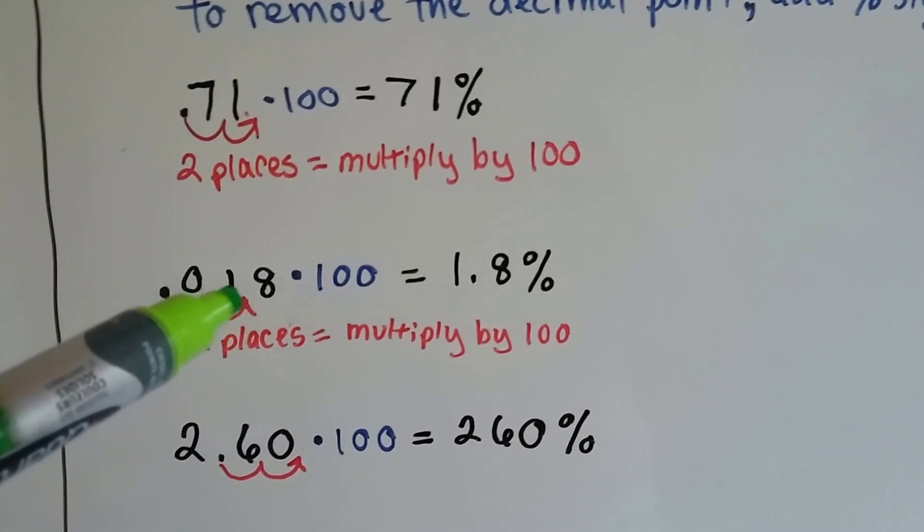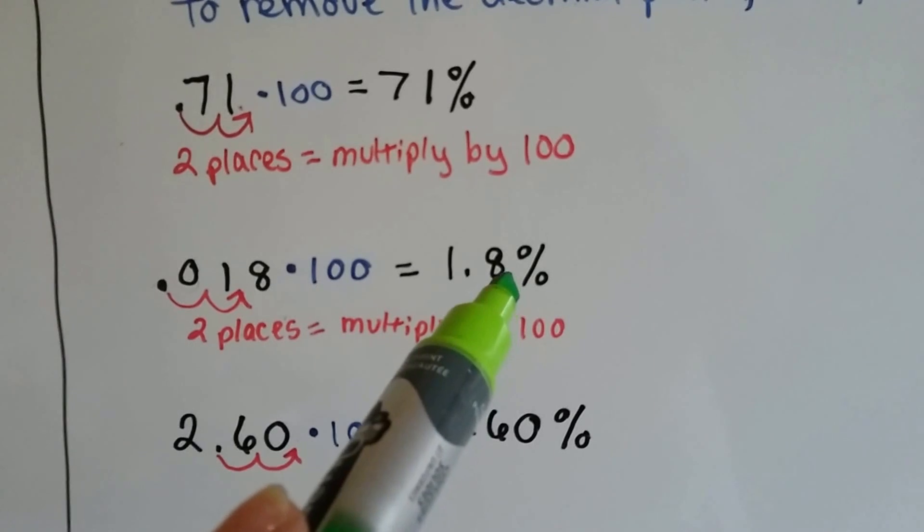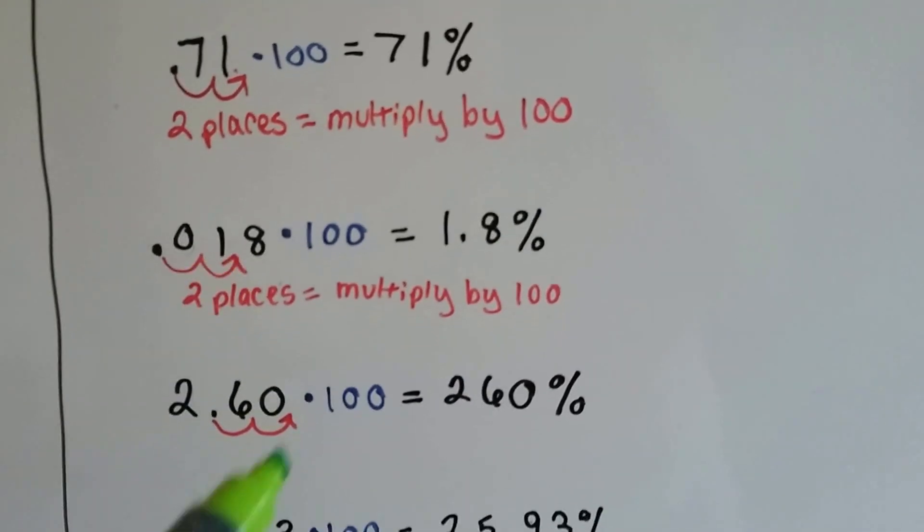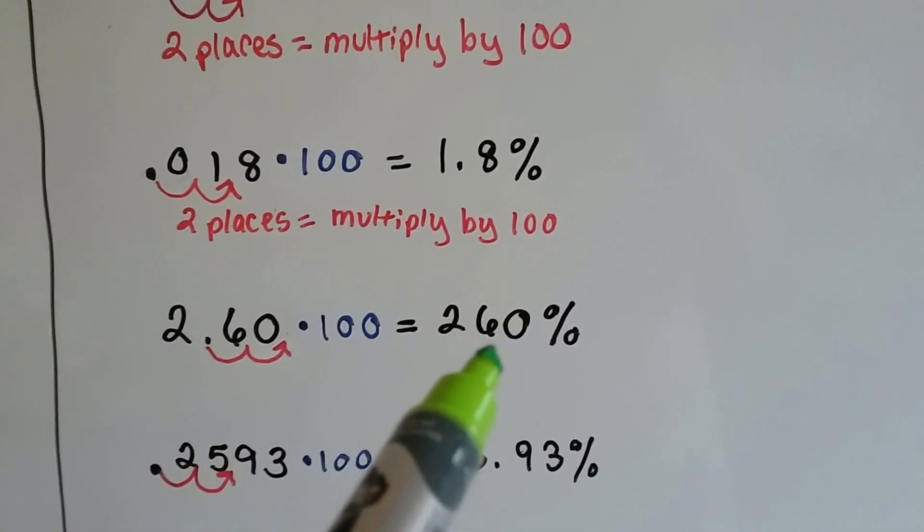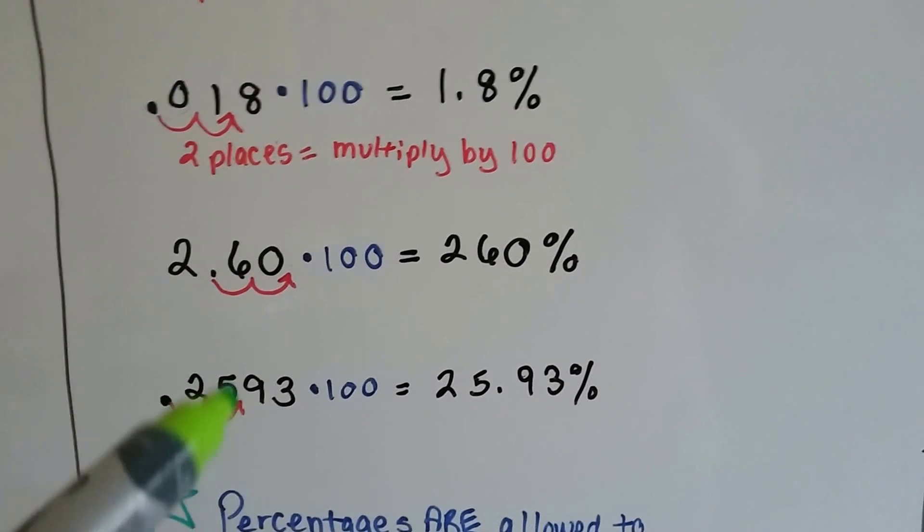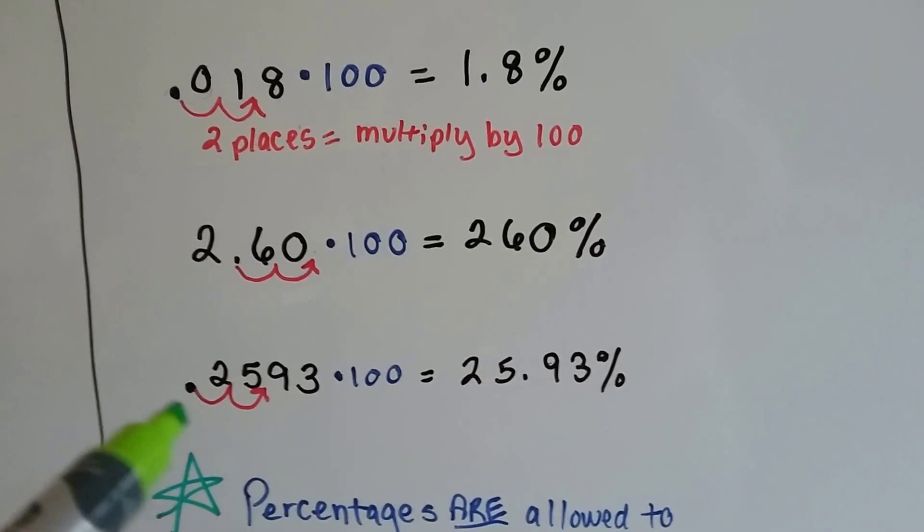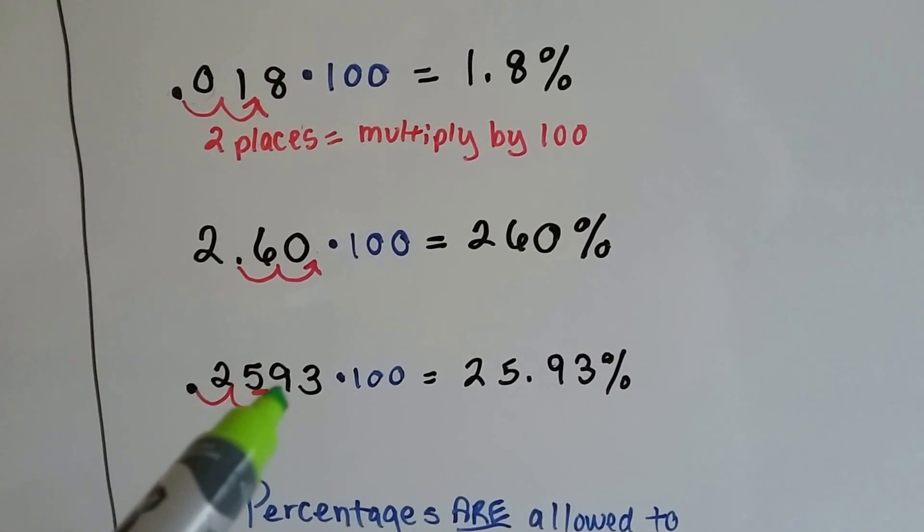.018, which is 18 thousandths times 100, becomes 1.8%. Because it moved two places in between the one and the eight. 2.60 times 100 becomes 260%. And .2593 times 100 to become a percentage. It moves two points, two places, in between the five and the nine.